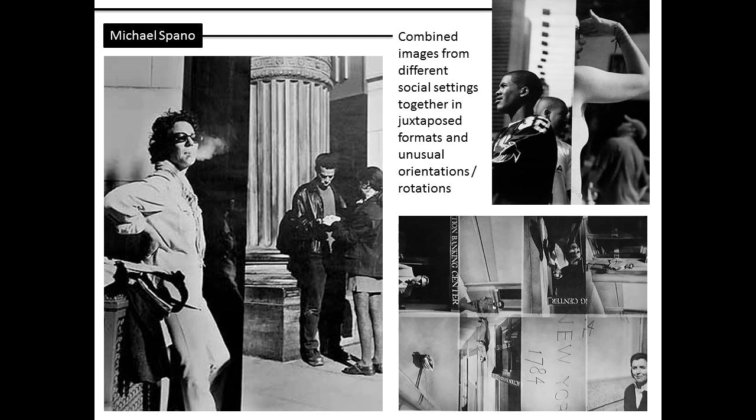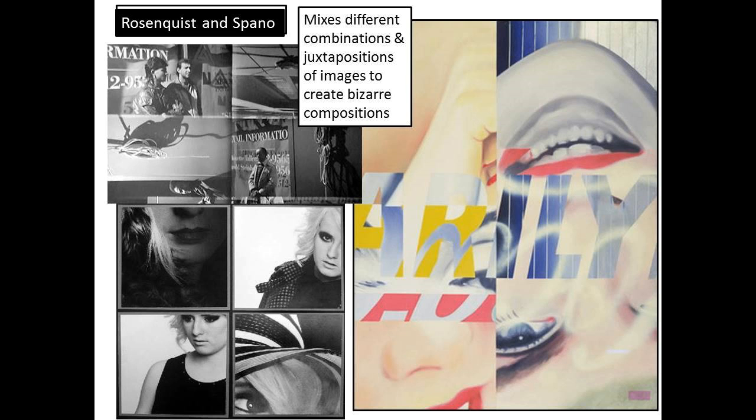Rosenquist uses a mixture of text and image with different orientations and rotations of images together in one format. Even though it looks quite simple, getting the balance of space is very tricky — and especially if you're mixing together different colours, it becomes even more tricky to get that balanced and looking correct.